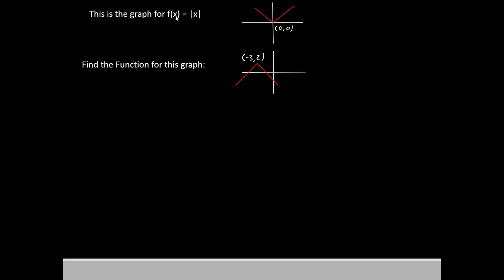So I've given you the graph for this function, f(x) equals absolute value of x. It looks kind of like the letter v. It is centered on 0,0.